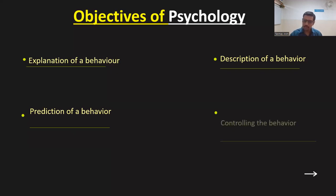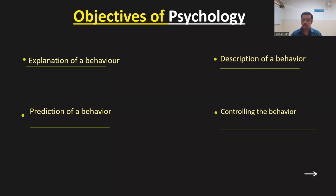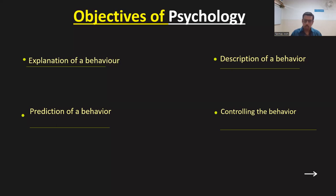To control unwanted behavior and to enhance and support wanted behavior, you must be able to predict a person's behavior — how he will act, how he will behave in a given future situation. And then the fourth goal is controlling the behavior. How far understanding of this subject will help you to control behavior if it is inappropriate, unwanted, or undesired — or, if it is appropriate behavior, how can you promote it or give some reinforcement so that the occurrence of that particular behavior gets strengthened. These four goals help you to understand a person's mindset and actions.